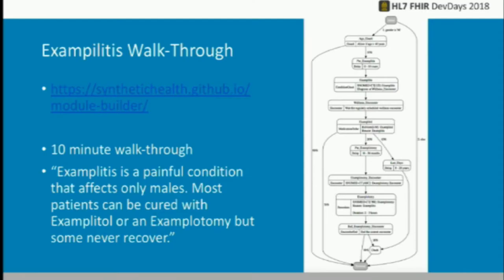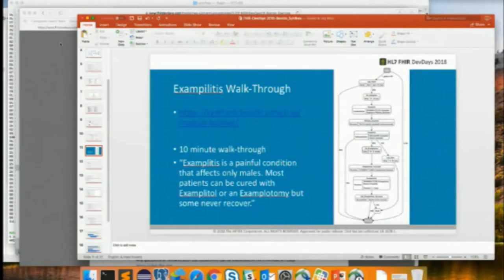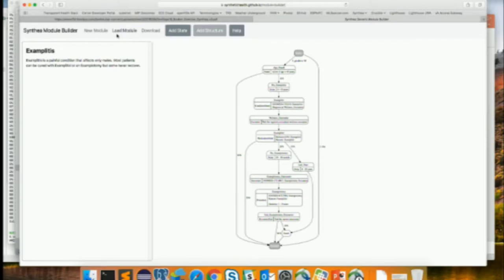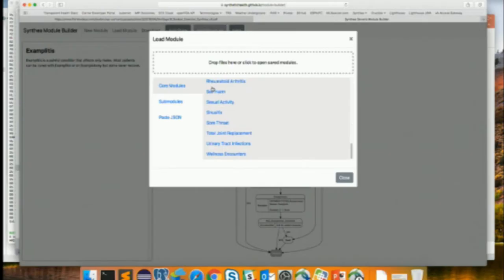At this point I want to show you a walkthrough of a module called examplitis. It's my demo condition because it's simple and people don't try to call me on its clinical accuracy. Examplitis is a painful condition that only affects males. Most patients can be cured either with examplitol or an examplotomy, but some never recover and they die. Let me bring you over to examplitis. This is the module builder — it's on GitHub, you can access this and load modules.